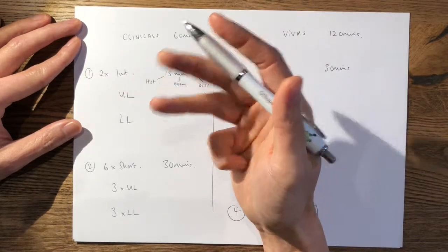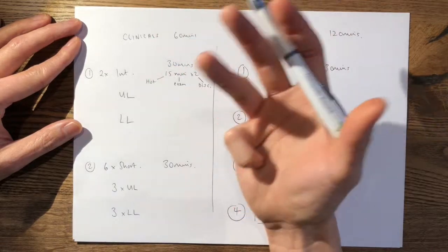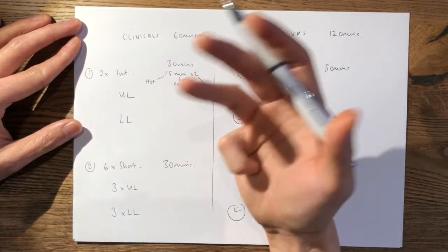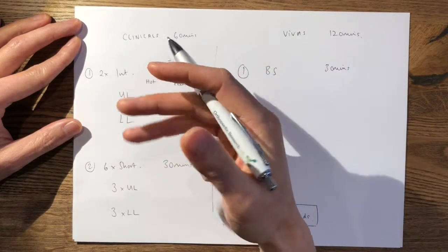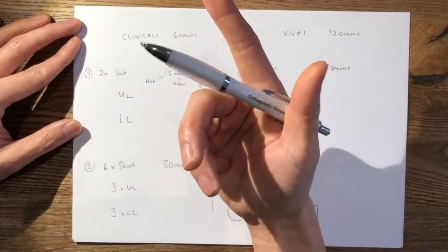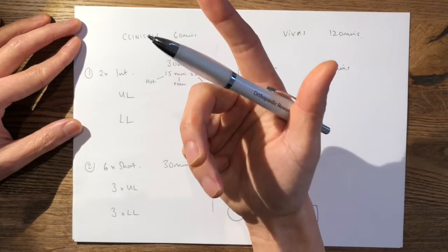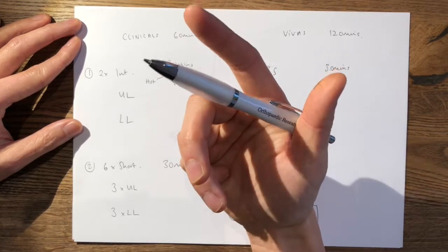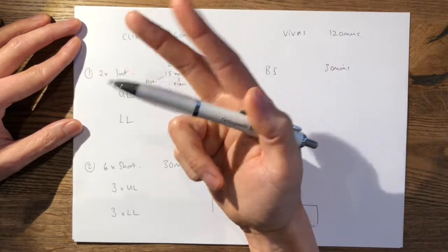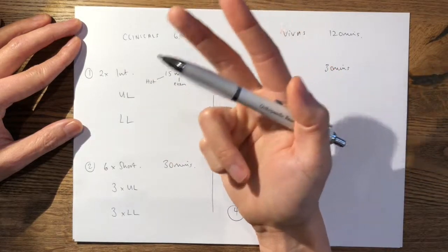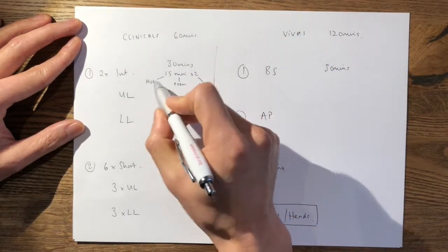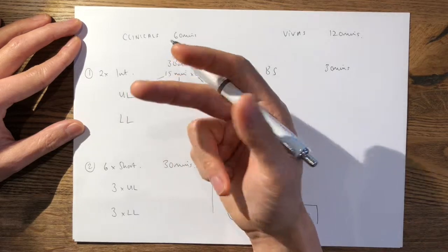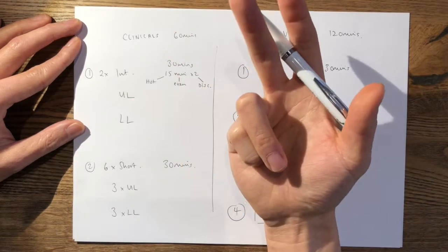The examiners aren't allowed to discuss their marks, so they mark completely independent of each other. For example, one examiner may give you a seven for your knowledge and judgment whereas the other would give you a six, and that will average out as a 6.5 for your knowledge and judgment for that particular part. So for history taking, for example, you'll get a 6.5.